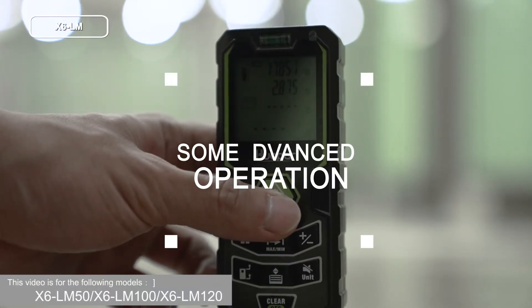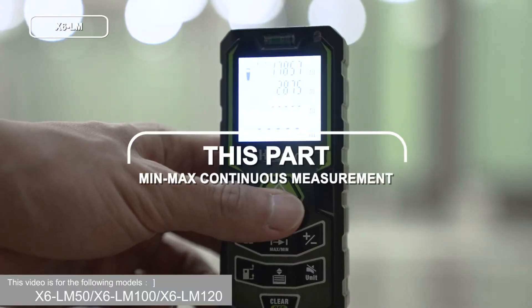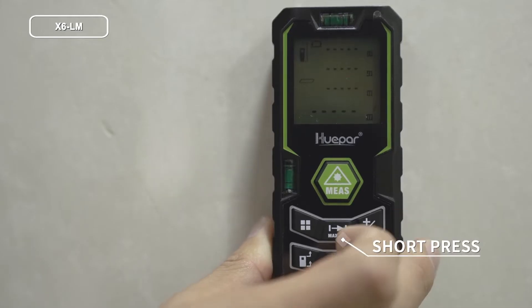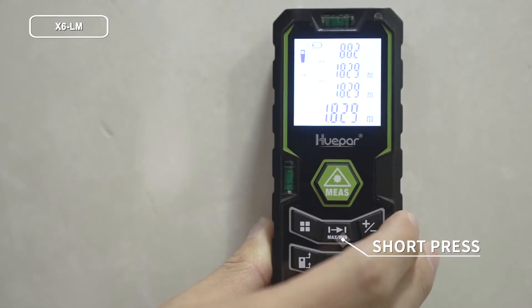Next, move to some advanced operation. Press this key to activate continuous measurement.